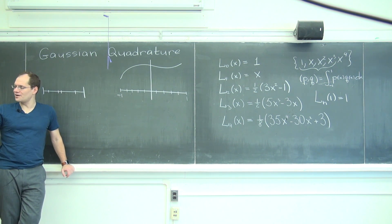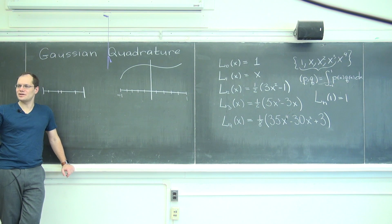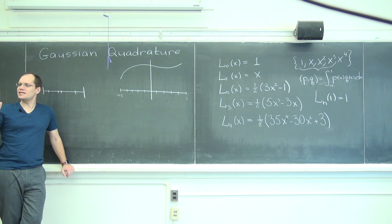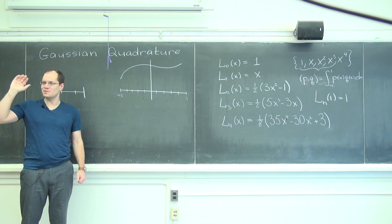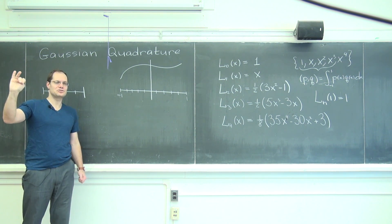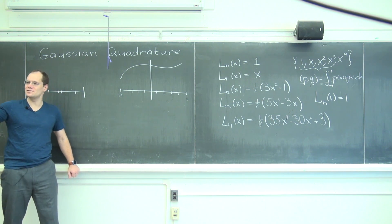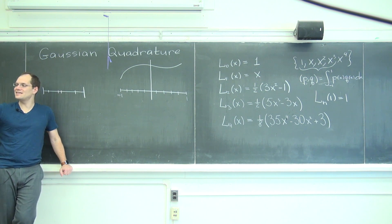In the case of four, you'll see how to generalize it in a moment to n. Let me choose the weights in such a way that at least all the constant, linear, quadratic, and cubic polynomials are integrated exactly.